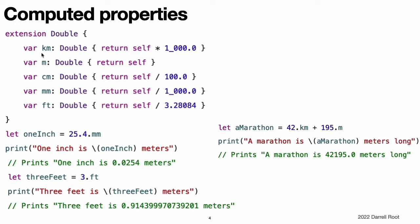Similarly, there are 3.28084 feet in a meter, so the foot computed property divides the underlying double value by 3.28084 to convert it from feet to meters.